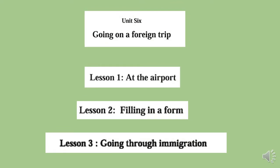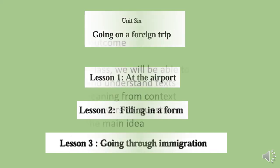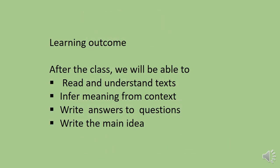Our today's lesson is Unit 6: Going on a Foreign Trip. Lesson 1: At the Airport. Lesson 2: Filling in a Form. And Lesson 3: Going Through Immigration. After the class, we will be able to read and understand text, infer meaning from context, write answers to the questions, and write the main idea.